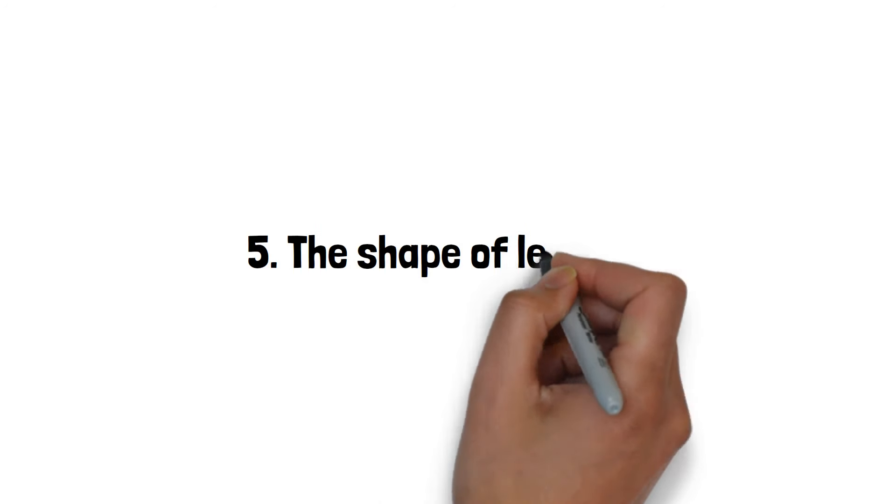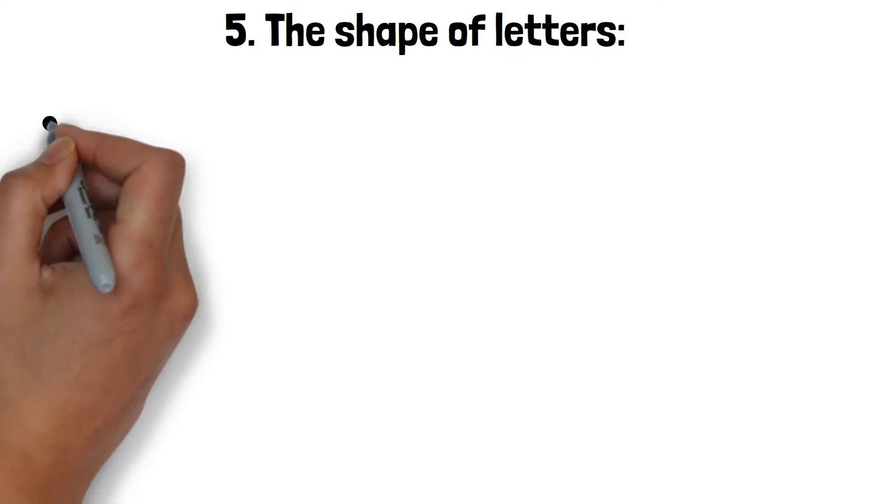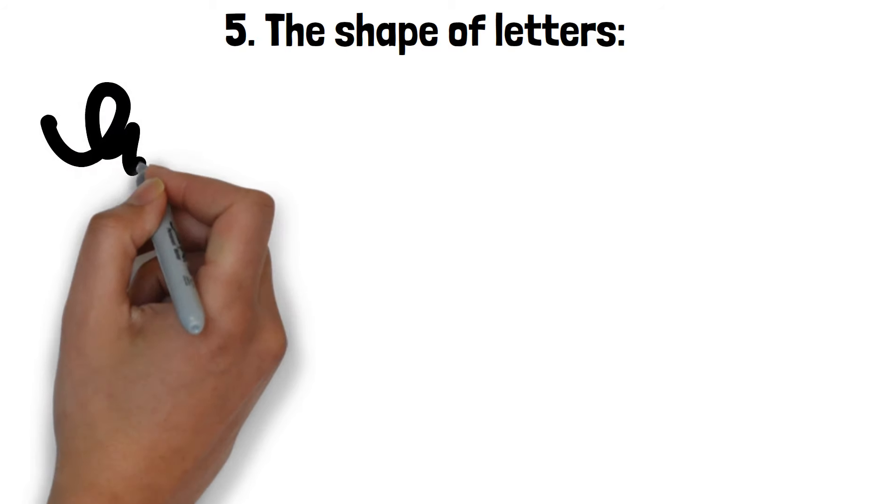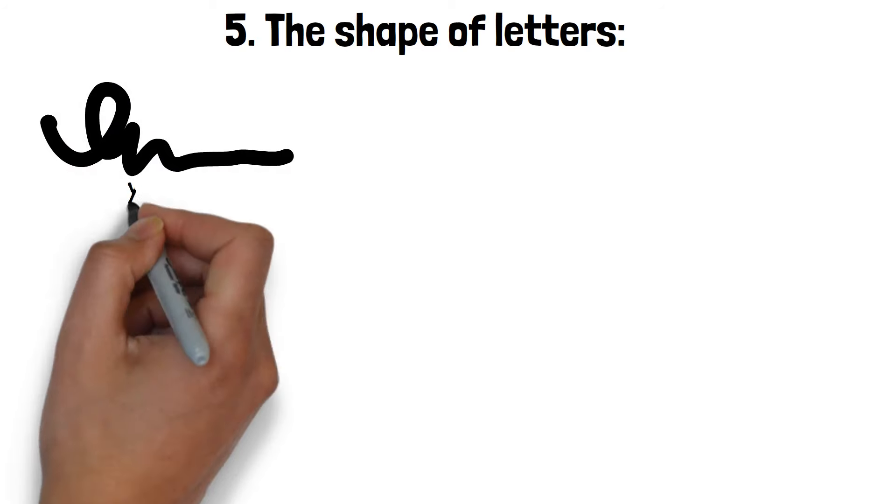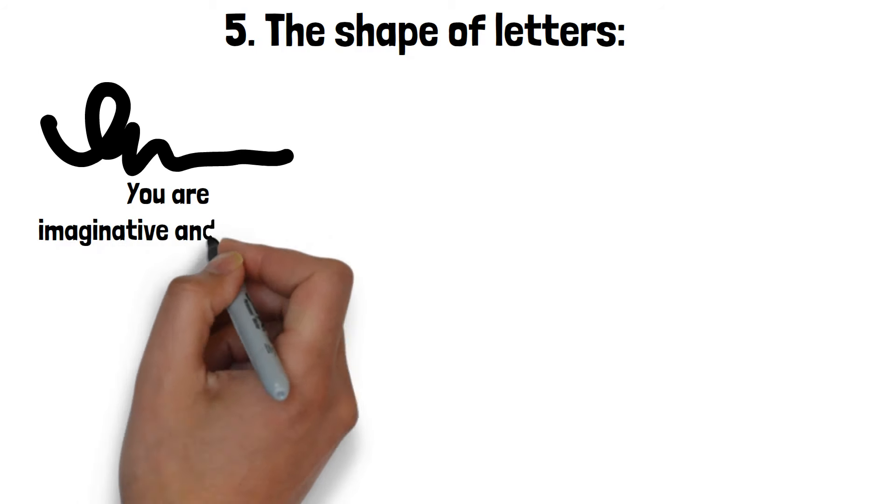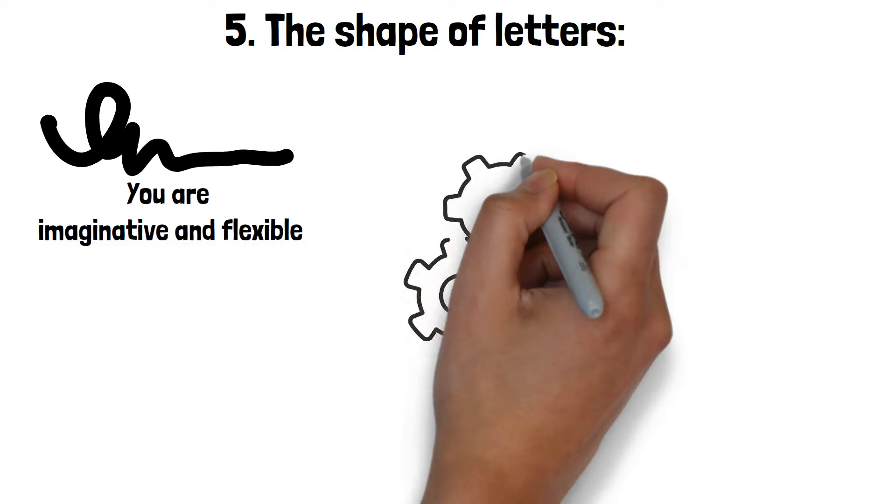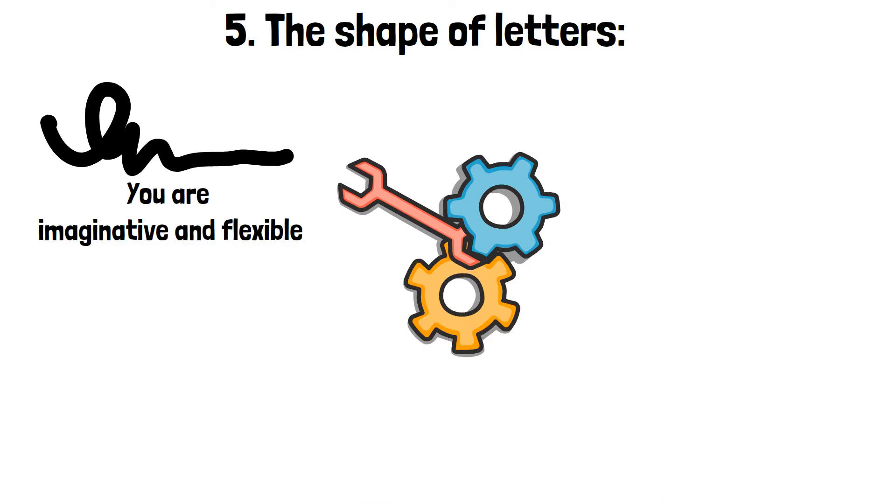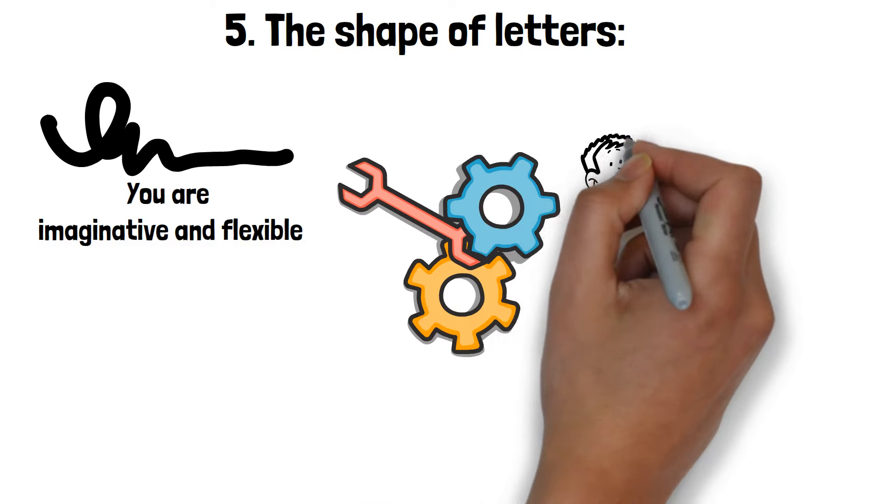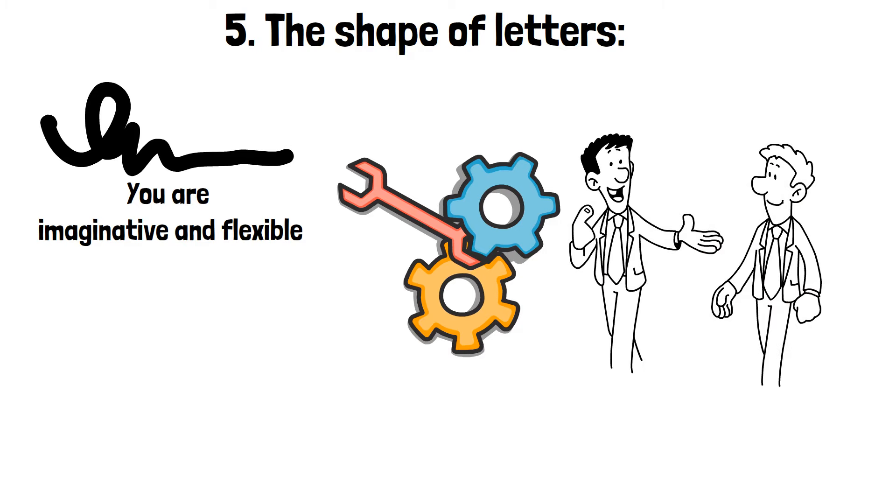The shape of letters. Rounded letters can be a sign of creativity and open-mindedness. If your handwriting has smooth, rounded shapes, it indicates that you are imaginative and flexible in your thinking. People with rounded letters tend to be more artistic and enjoy exploring new ideas and experiences. This type of handwriting reflects a person who is open to different perspectives and willing to embrace change.